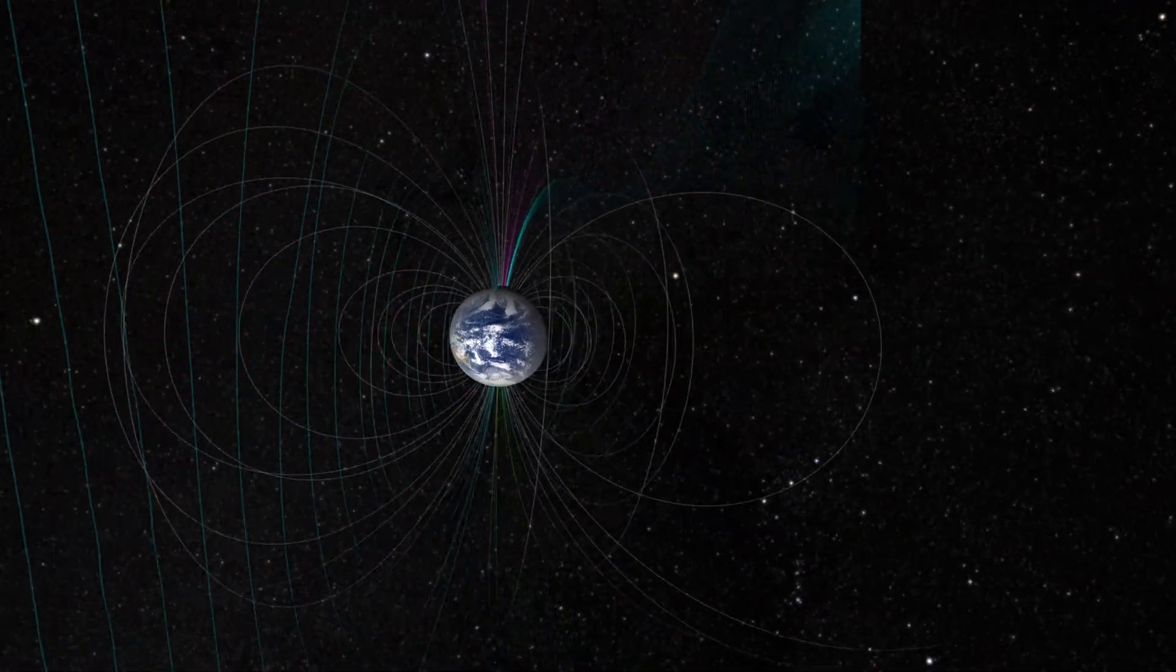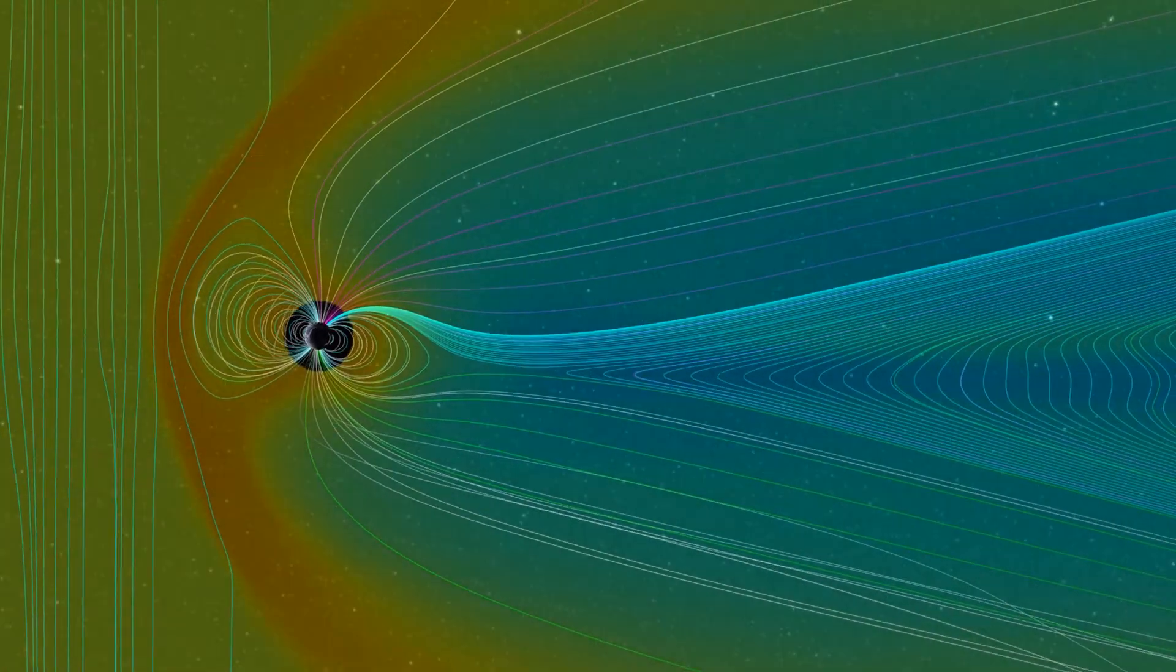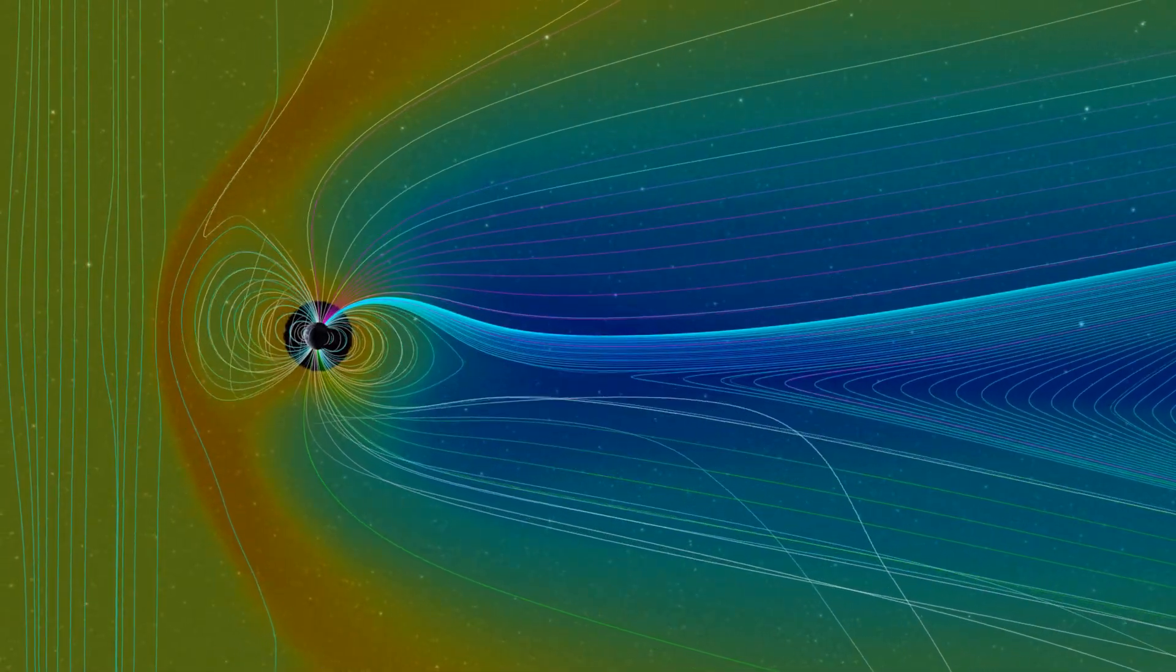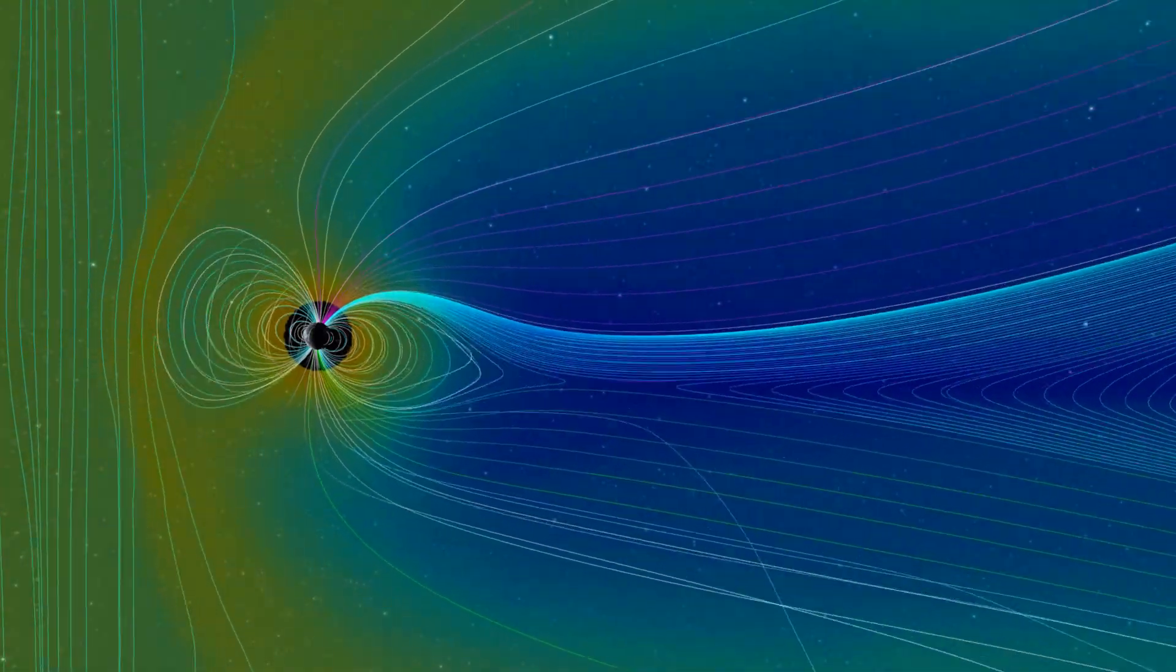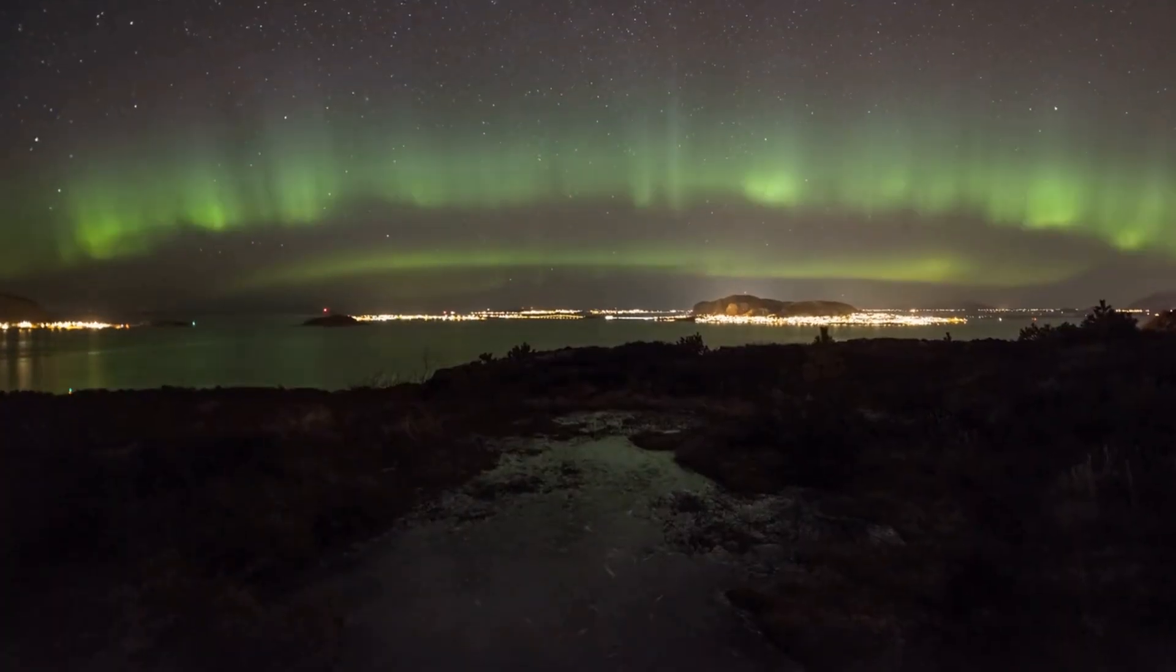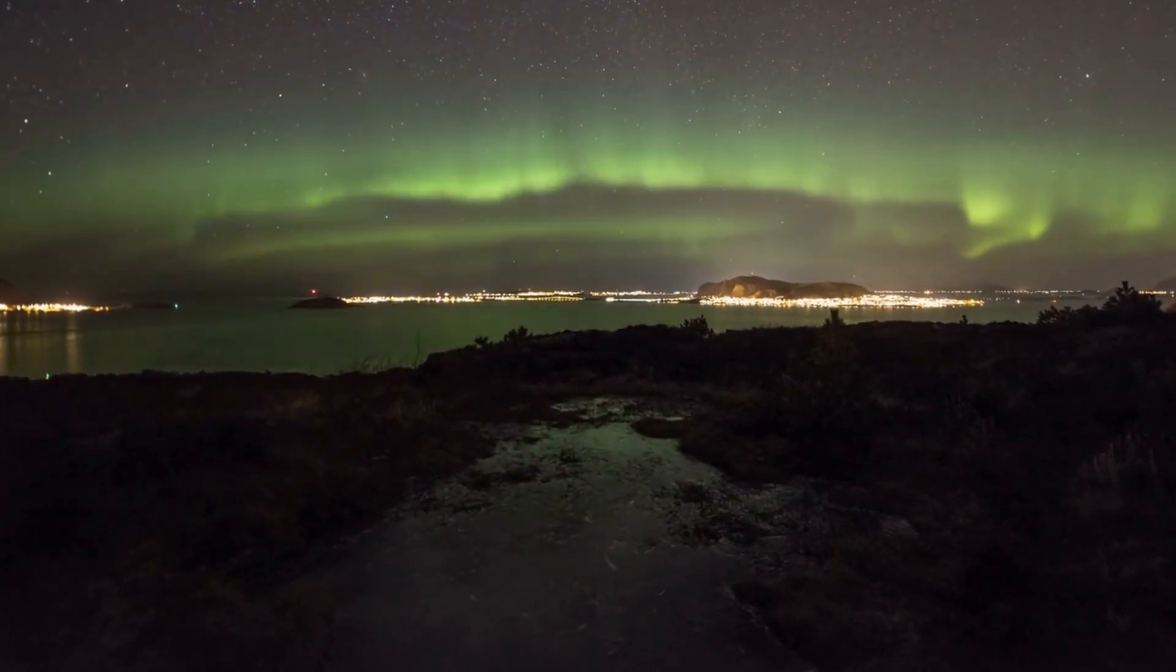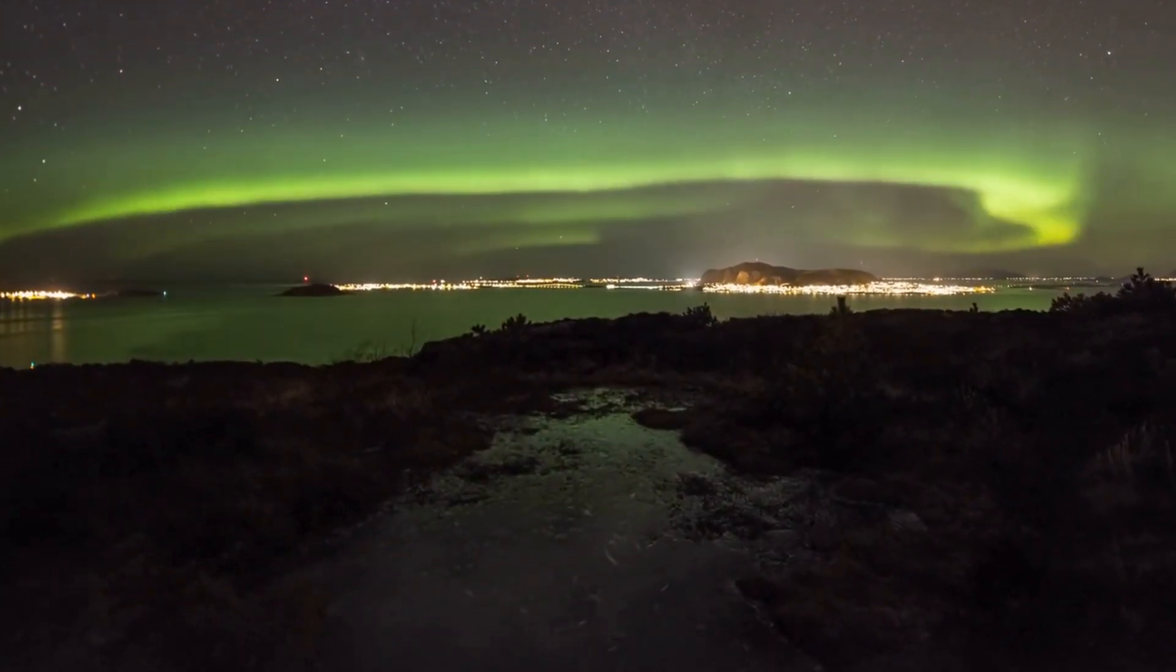The Russell-McFerron effect occurs during the equinoxes when the Earth's magnetic field weakens, allowing solar wind particles to enter the Earth's atmosphere more easily. This can cause a surge in aurora activity, resulting in more frequent and intense Northern Lights displays.